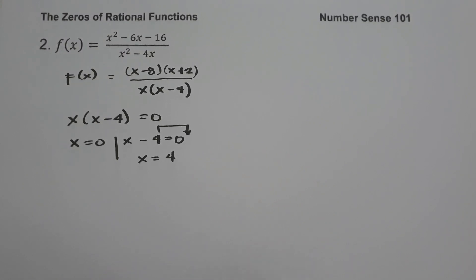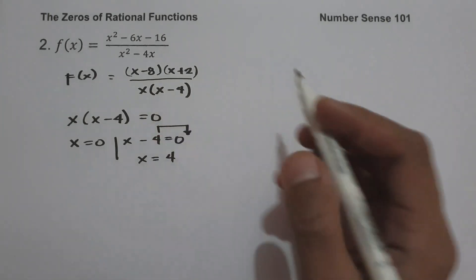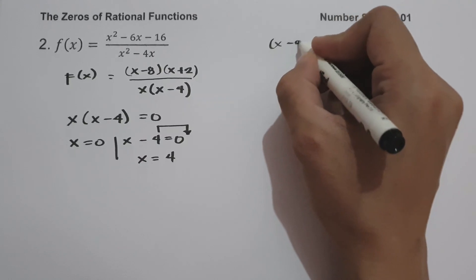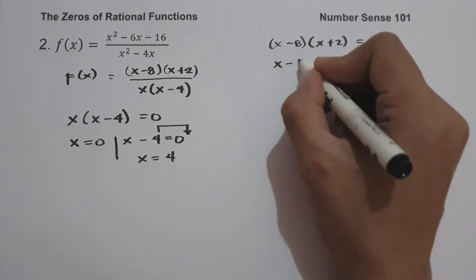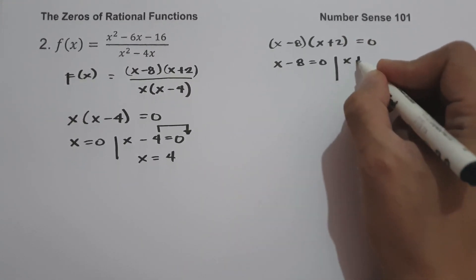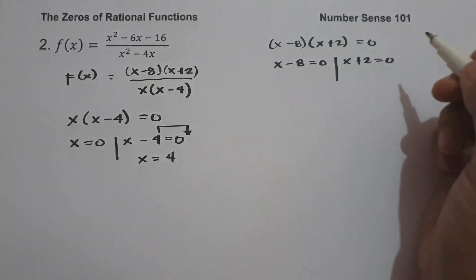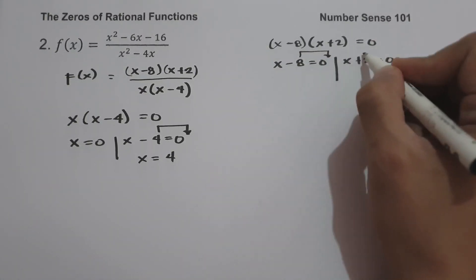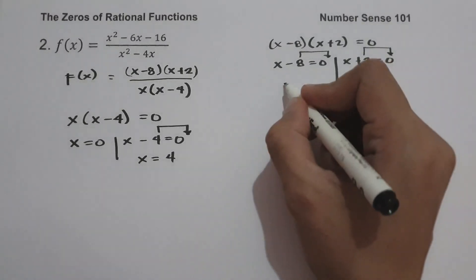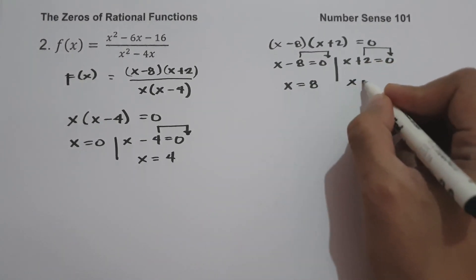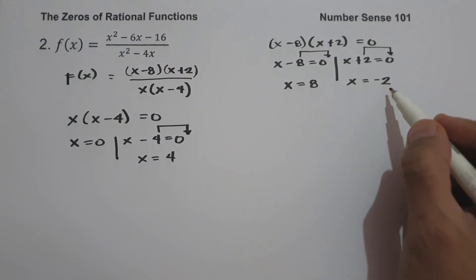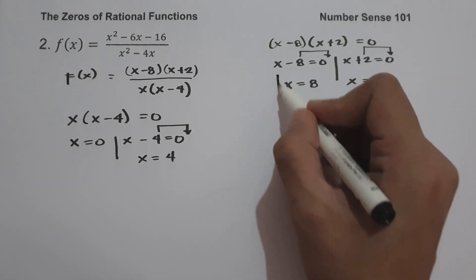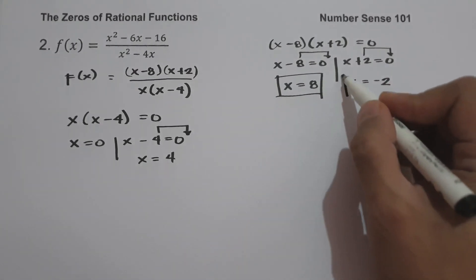Next, we set the numerator equal to 0: x minus 8 times quantity x plus 2 equals 0. This gives x minus 8 equals 0 and x plus 2 equals 0, so x equals 8 and x equals negative 2. Since 8 and negative 2 are not restricted values, the zeros of the function are 8 and negative 2.